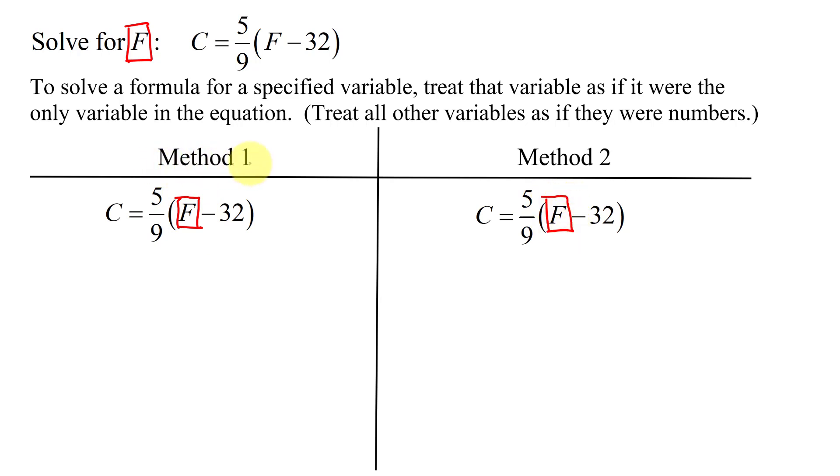In the first method, I'm going to totally get rid of this 5 ninths in front of the parentheses. To do that, I'm going to have to multiply both sides of the equation by the reciprocal of 5 ninths, which is 9 fifths.